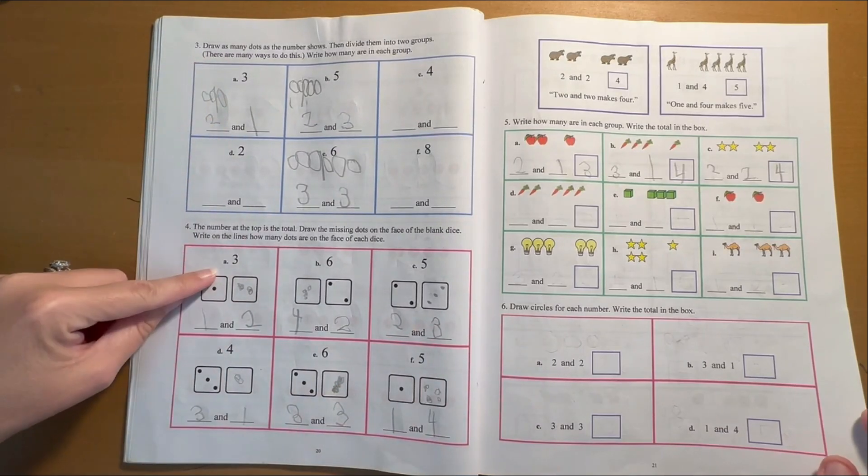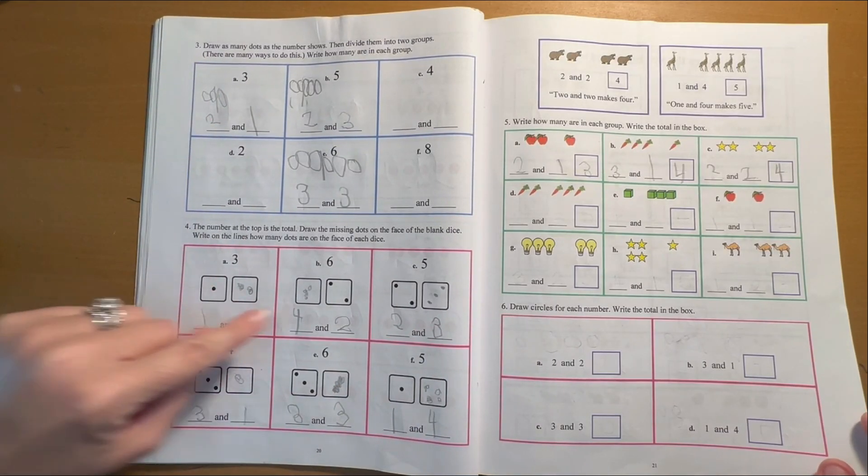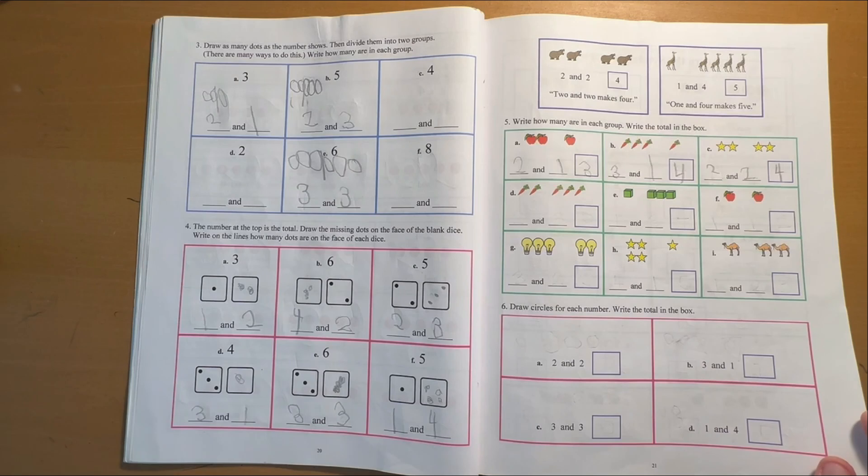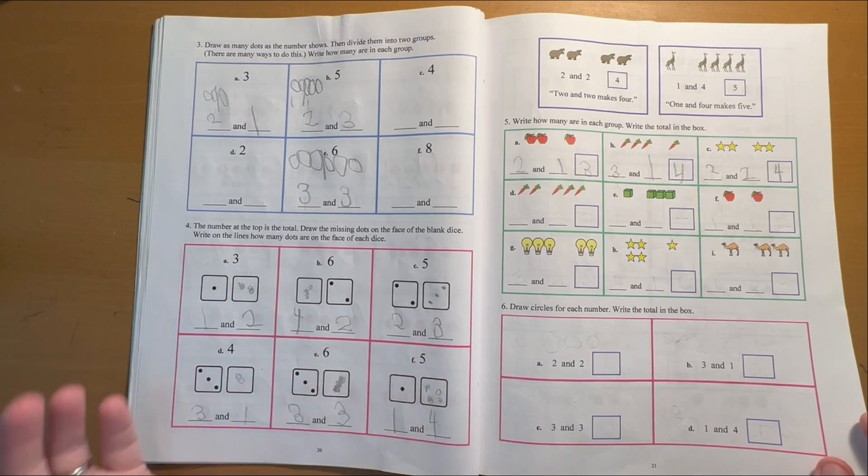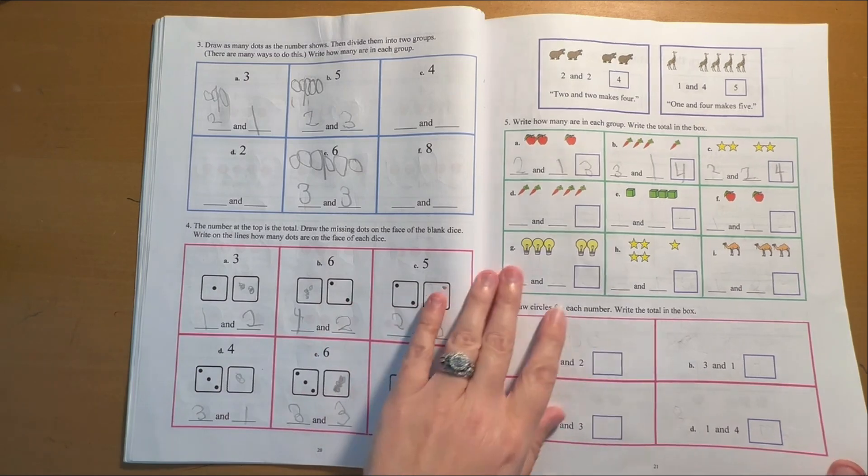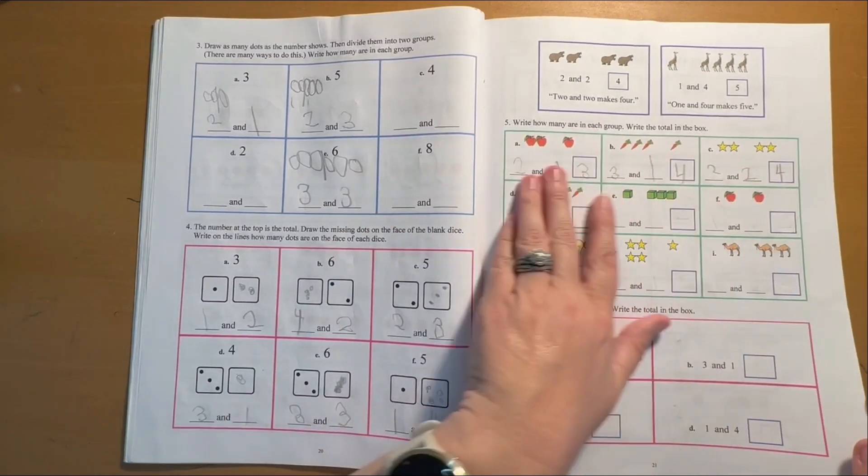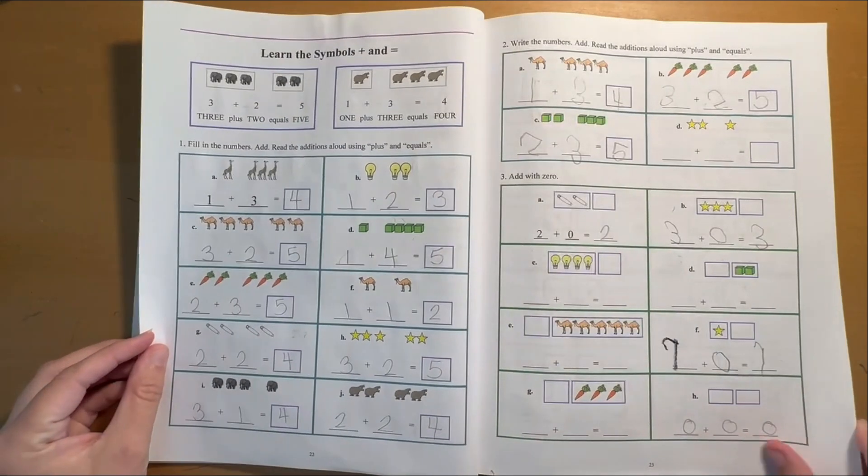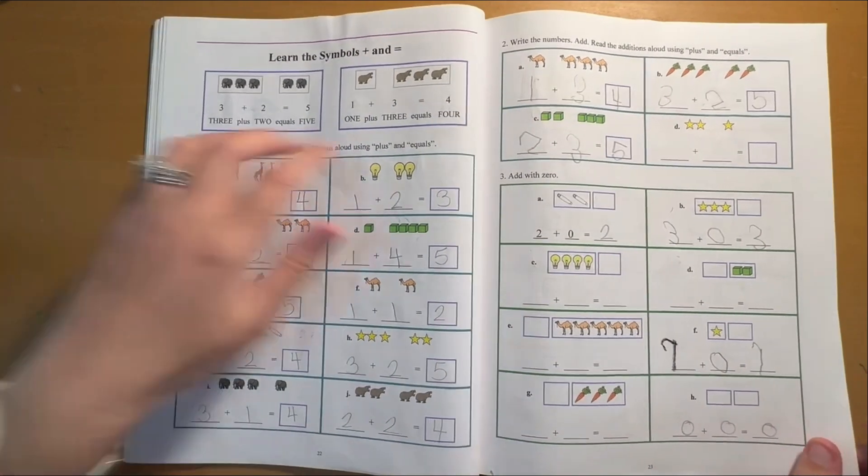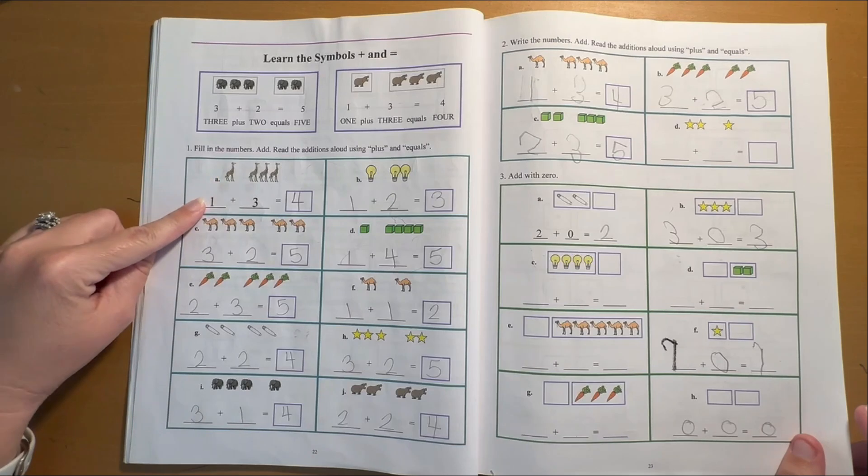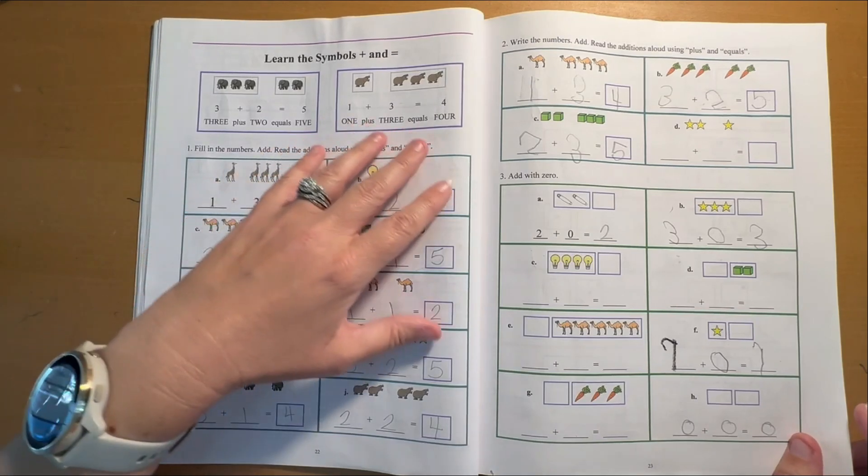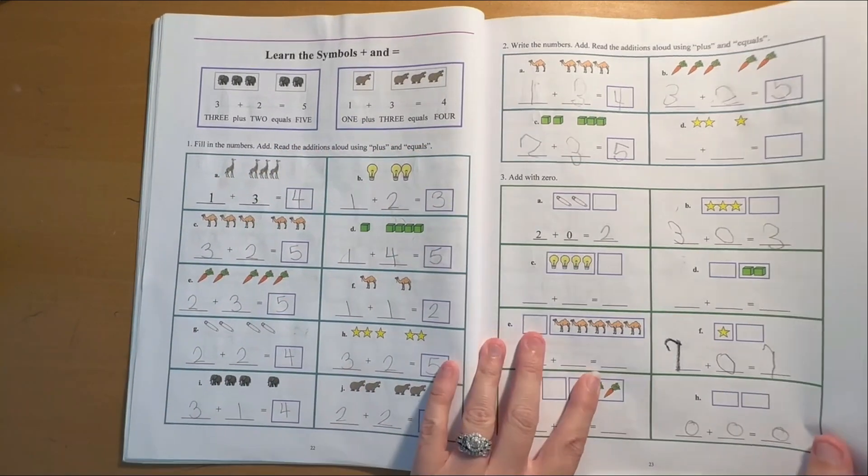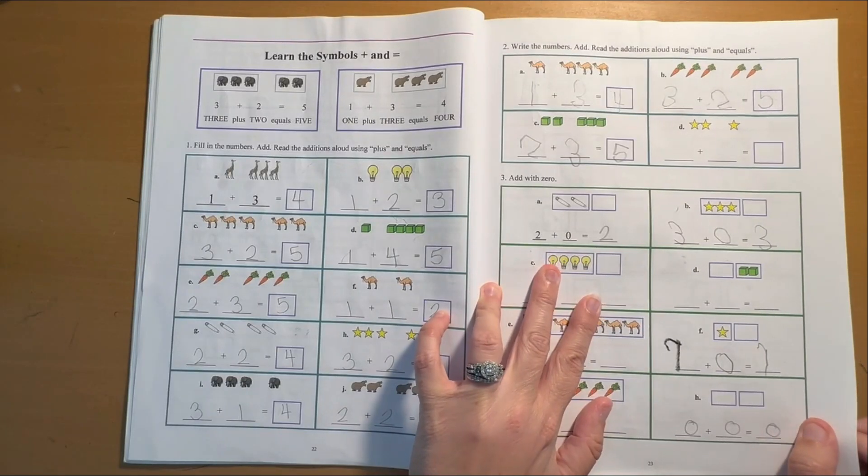Then you start using dice, which, you know, there's no manipulatives in this, but they are helping you to visualize it. We're using some fruit to make different numbers. And now we're going to start introducing the plus sign and actually start learning the structure of a math equation.